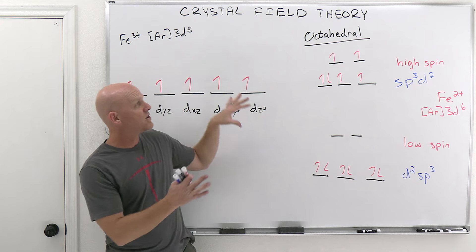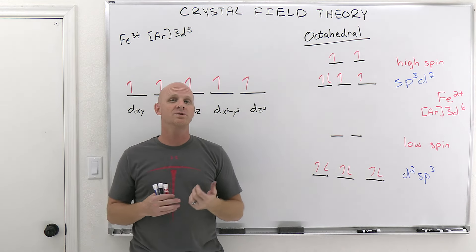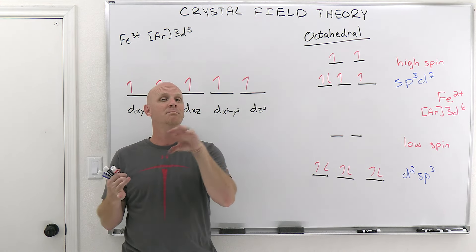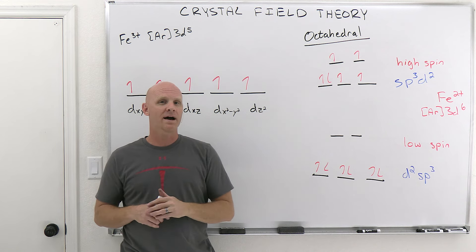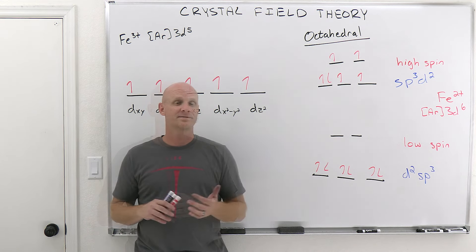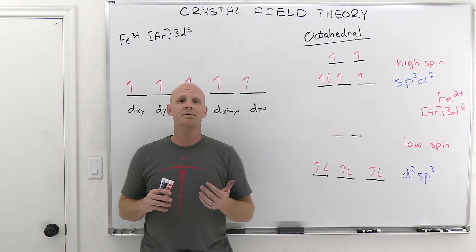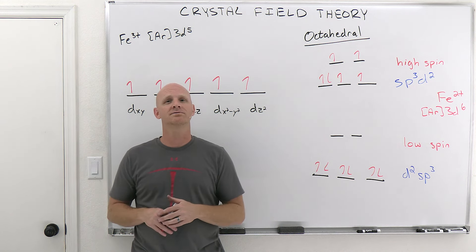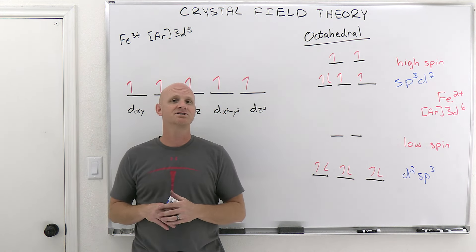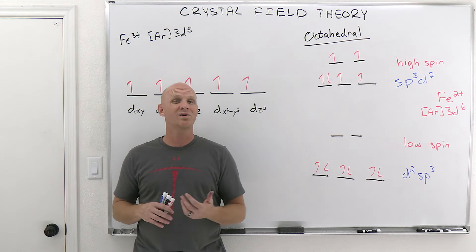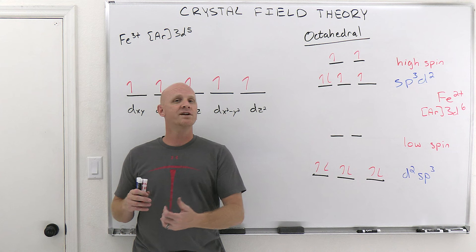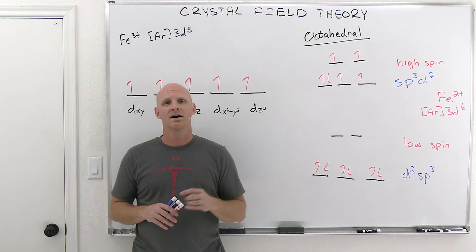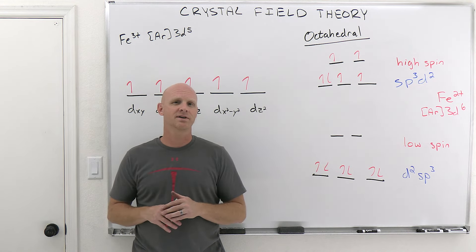In the next lesson, we'll see how crystal field theory explains why coordination compounds are brightly colored and have interesting magnetic properties — particularly paramagnetism. If you found this lesson helpful, a like and comment support the channel. For those studying for final exams, check out my Gen Chem Master Course with rapid reviews of all of Gen Chem 1 and 2 and practice final exams. A free trial is available.